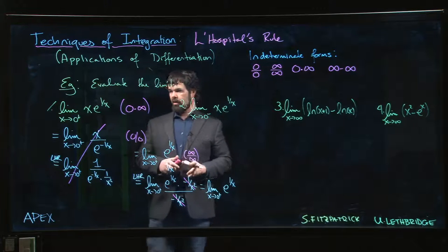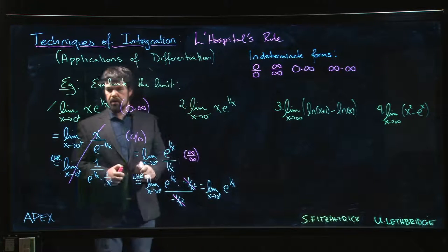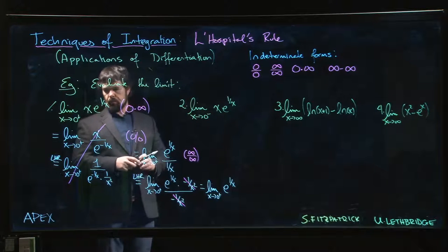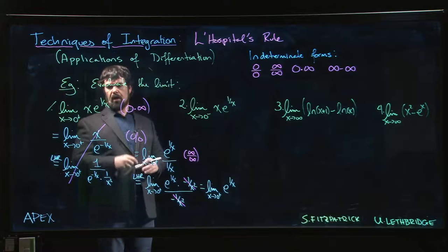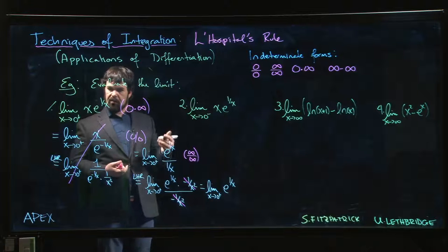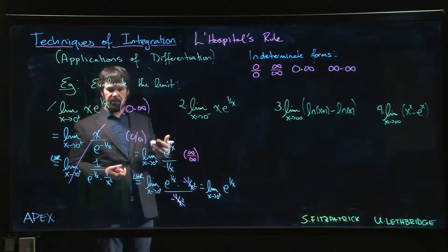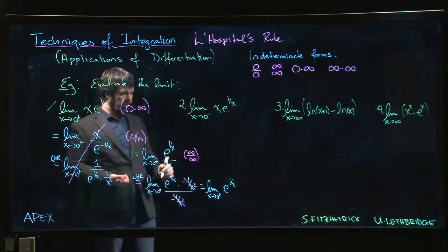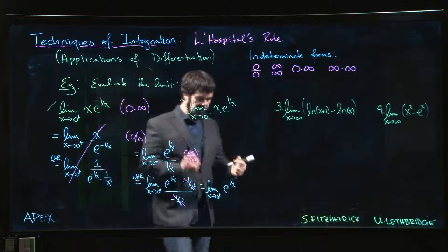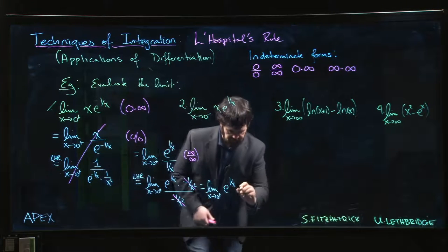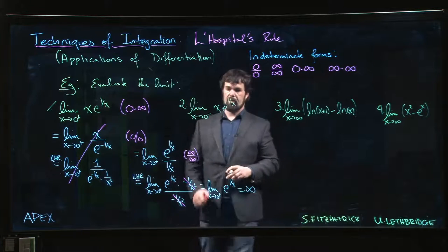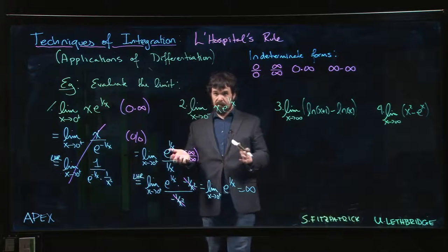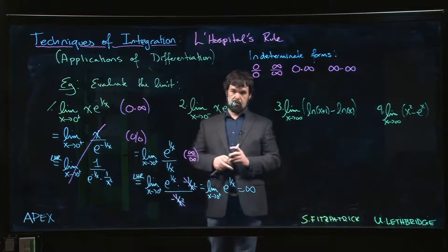As we already agreed, as x goes to 0 from the right, 1 over x is going to plus infinity. And if 1 over x is going to plus infinity, e to the 1 over x is also going to plus infinity. So we get an answer of infinity.